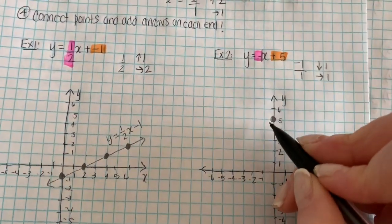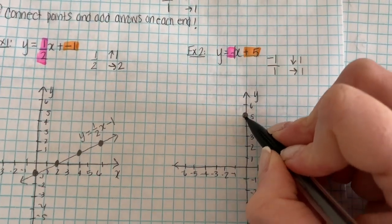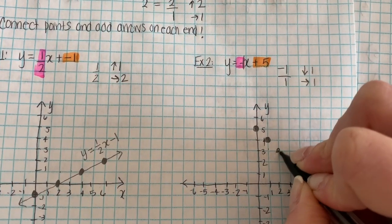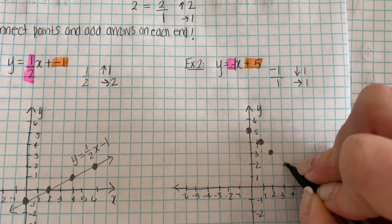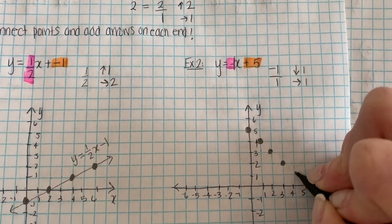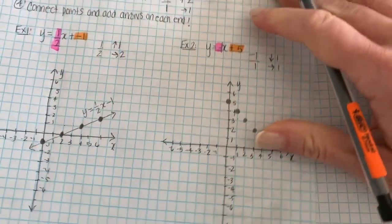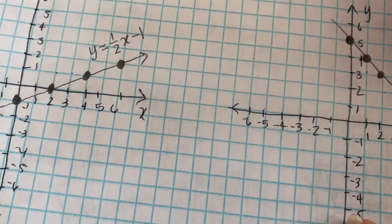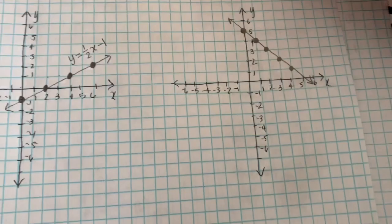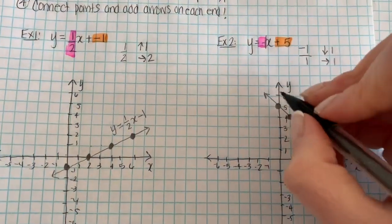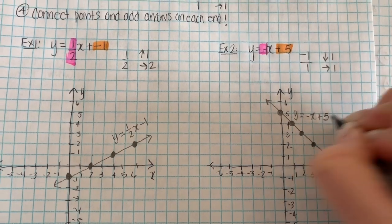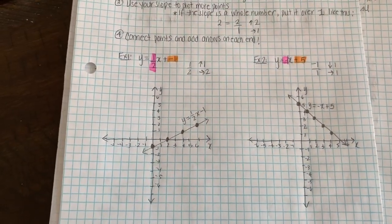So from your y-intercept, you start applying your slope. Down 1, over 1. Down 1, over 1. Down 1, over 1. And you can keep going as far as you want, but this is enough. And then again, we connect our points, extend it past the points, and add arrows. And I'm going to label. This is y equals negative x plus 5. And that's it.